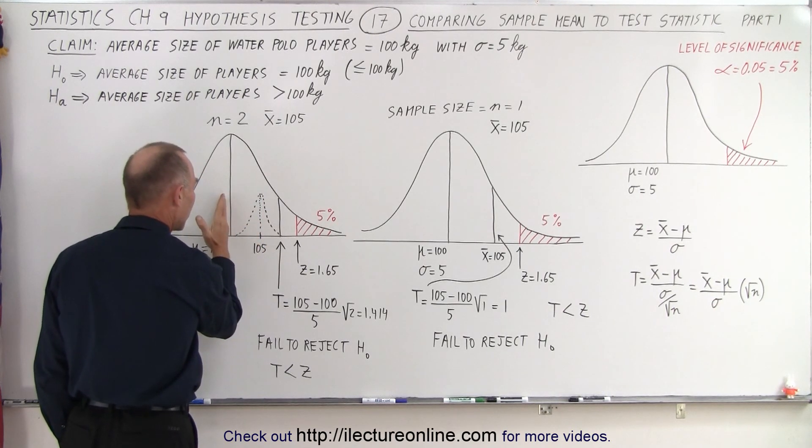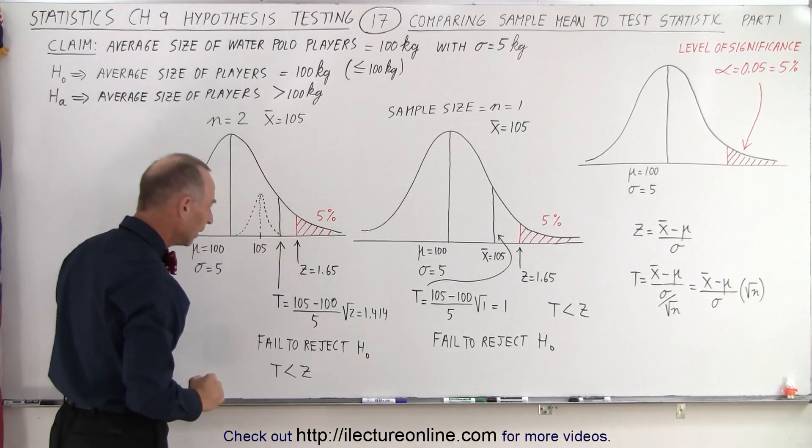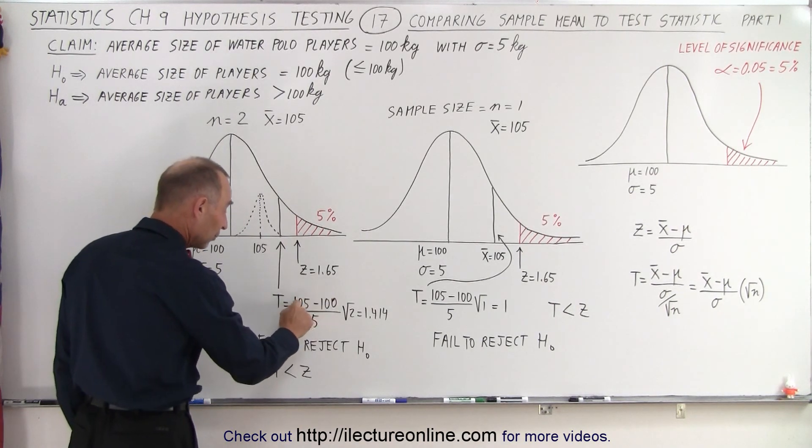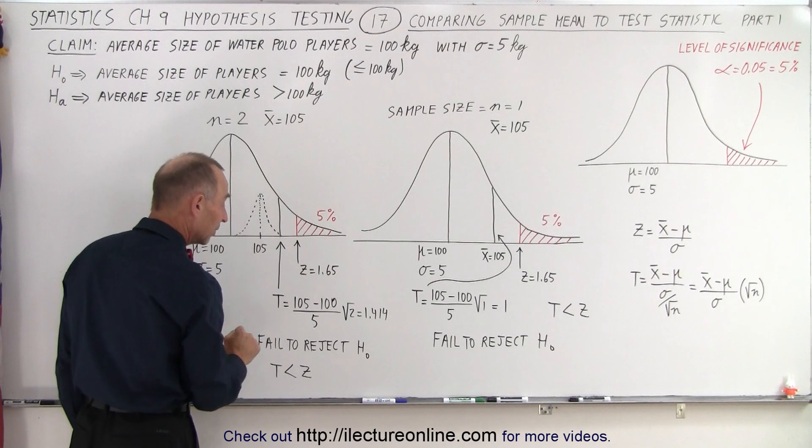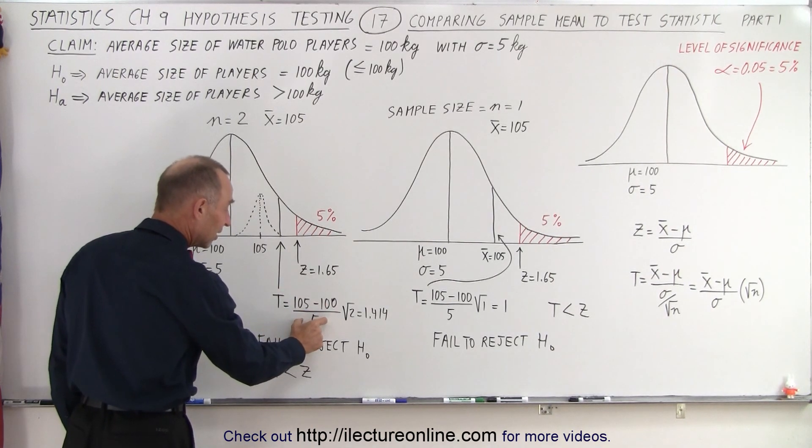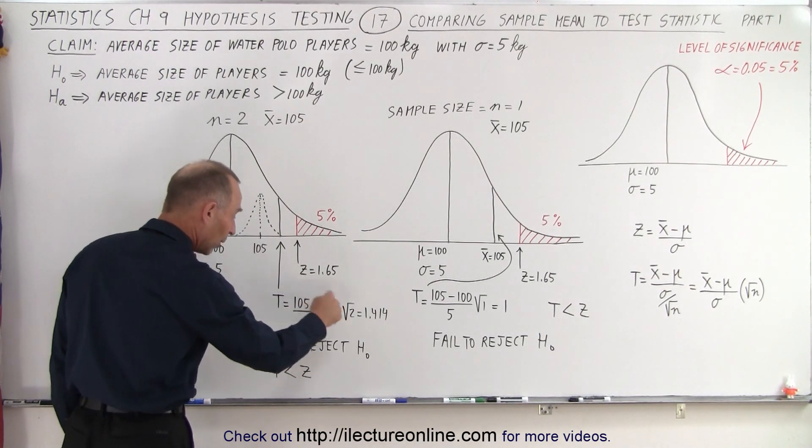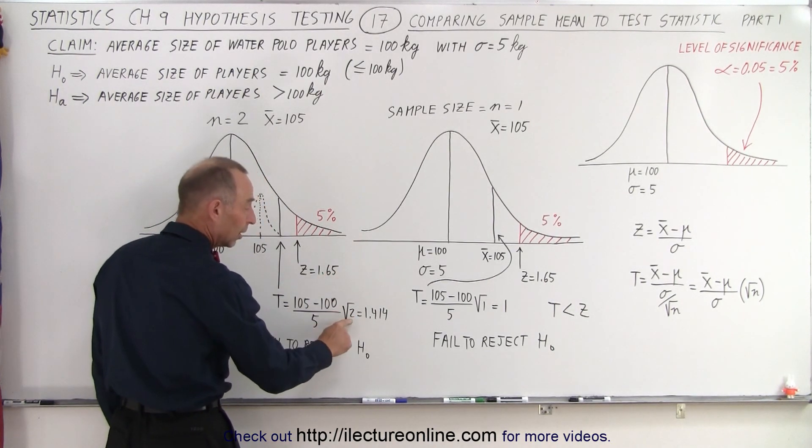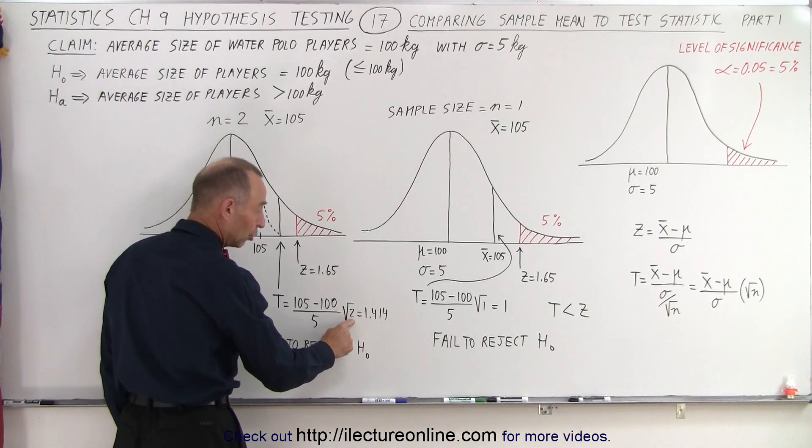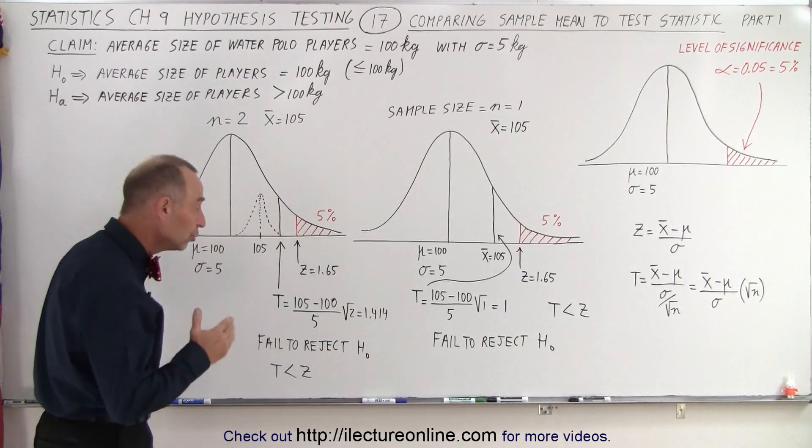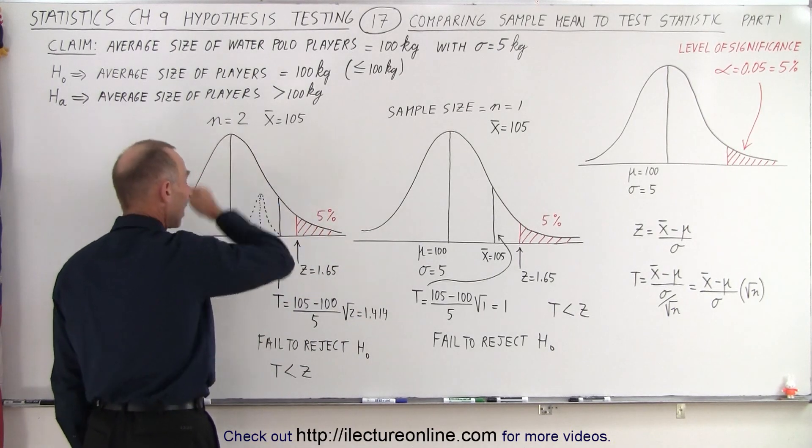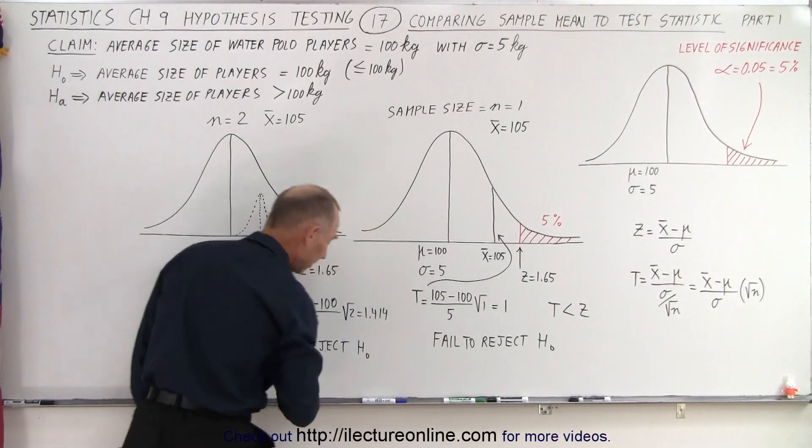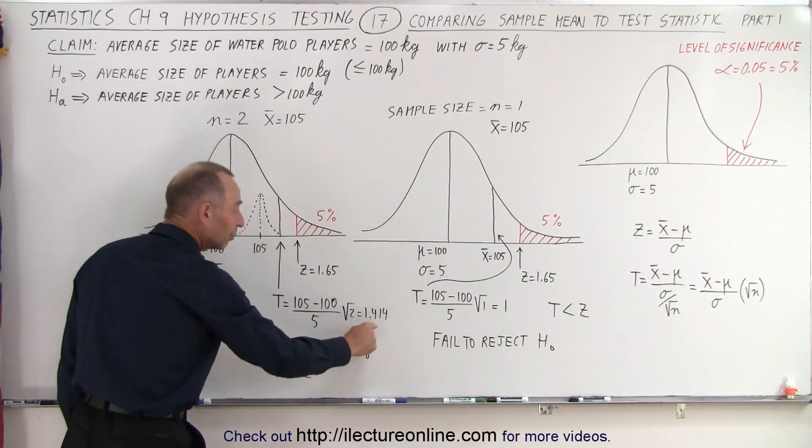Notice that the sample mean is still at 105, still the same difference from the mean of the population to the mean of the sample. But now when we calculate the test statistic, we take the difference between the mean of the sample and the mean of the population, divided by the standard deviation, which is still equal to 1. But now we multiply it times the square root of the sample size, which is 2, and the square root of 2 is 1.414. By doubling the size of the sample, we've changed the value of the test statistic from 1 to 1.414.